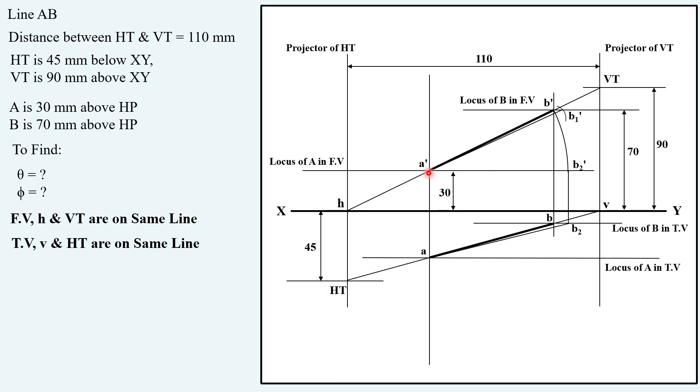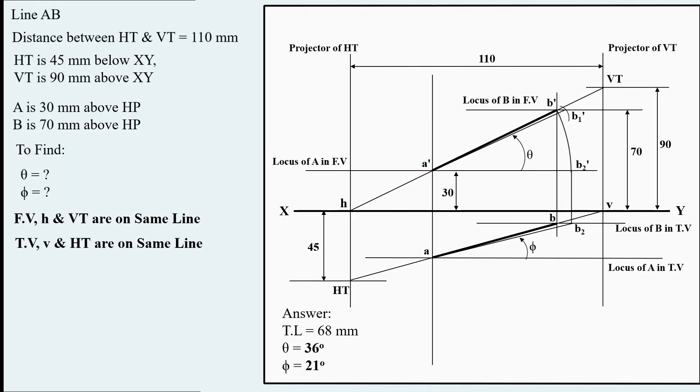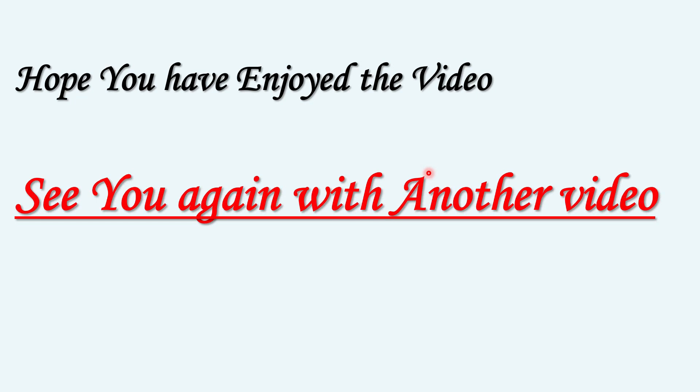The only thing is you have to find the angles now. So this is our theta, true inclination in HP, and true inclination with VP is here phi. If you do all the things as stated in this solution the values will be true length 68 mm, theta 36 degrees and phi will be 21 degrees. Hope you enjoyed the video, see you again with another video.